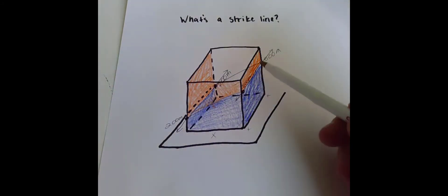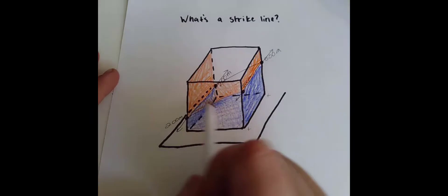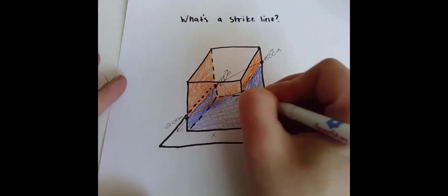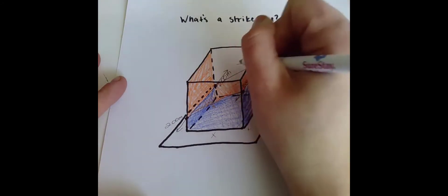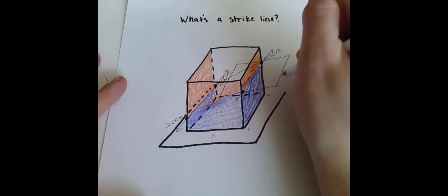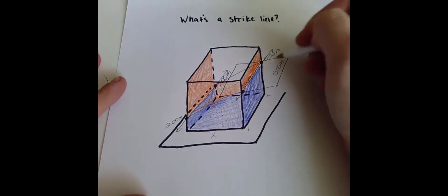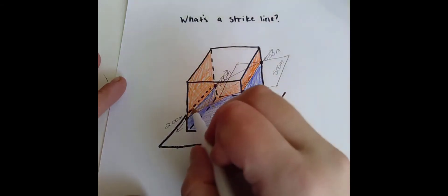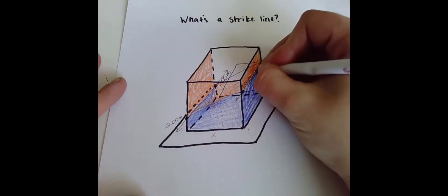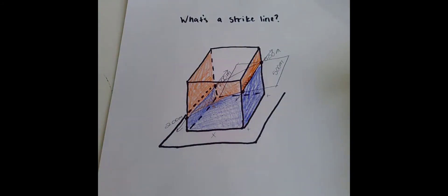What makes these lines strike lines is that now if I think about drawing my horizontal plane intersecting that contact, let's imagine we draw a horizontal plane where if I walked around on that plane I always had an elevation of 500 meters above sea level. This 500 meter high horizontal plane intersects the surface at this line. So that is my 500 meter strike line.